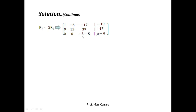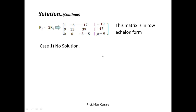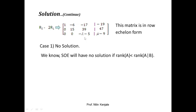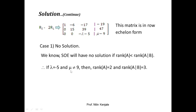We check for what values of lambda and mu the system has no solution. The system has no solution only if rank of A is less than rank of [A|B]. Observing the first three columns (matrix A): rank of A will be 2 only if lambda = minus 5, and rank of [A|B] will be 3 only if mu is not equal to 9. So if lambda = minus 5 and mu ≠ 9, then rank of A = 2 and rank of [A|B] = 3, and the system has no solution.